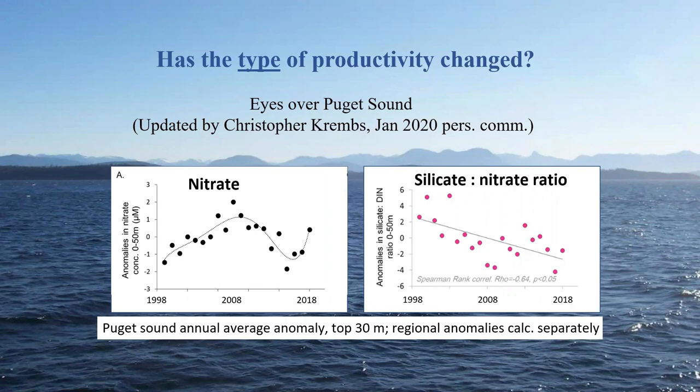There's only one point there so far to show it was going back up. Meanwhile, the silicate-to-nitrate ratio had declined. This was consistent with the idea that possibly as a result of climate change or local human activities, there was a change in surface concentrations and ratios of nutrients, which might be supporting a change from diatoms to smaller phytoplankton, or to more rapid recycling within the water column and a more bacterial-dominated food chain.